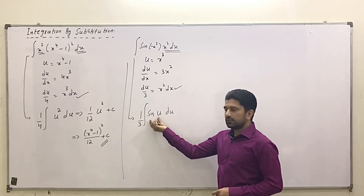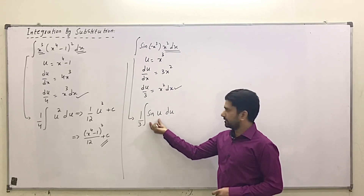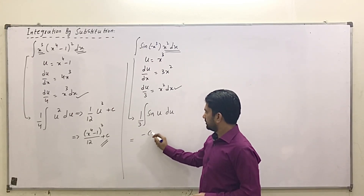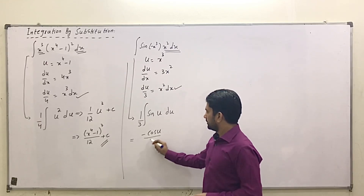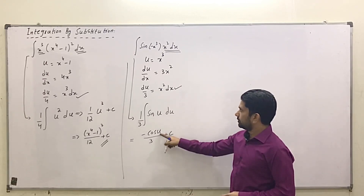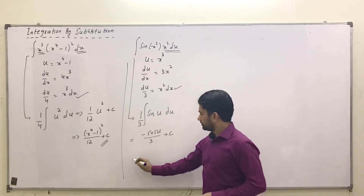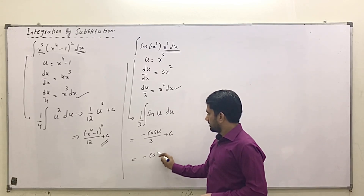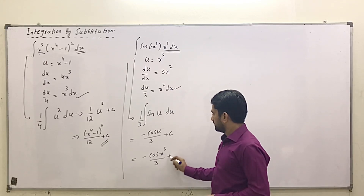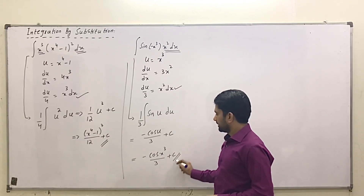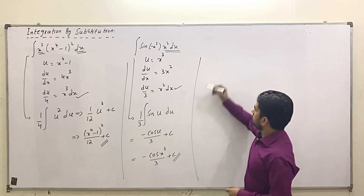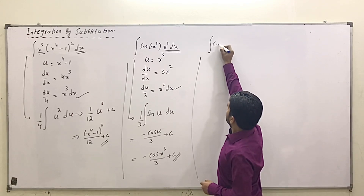This is now in standard form. We know that the integration of sin is minus cosine, so in the next step we write -cos(u)/3 plus a constant. Now substituting the value of u = x³, the final answer is -cos(x³)/3 plus a constant, and this is our solution.